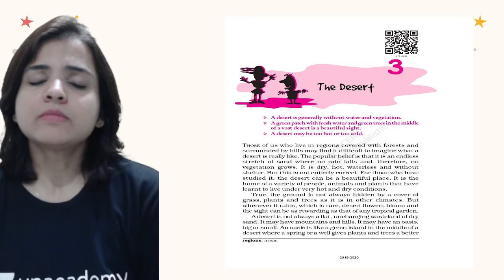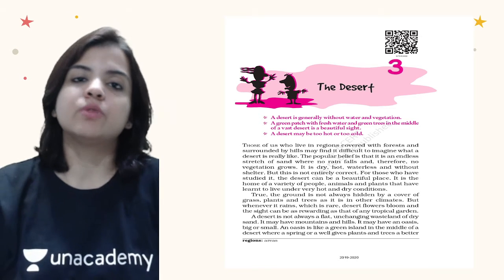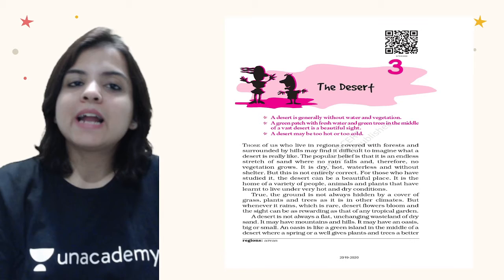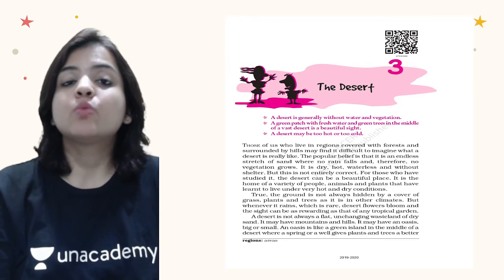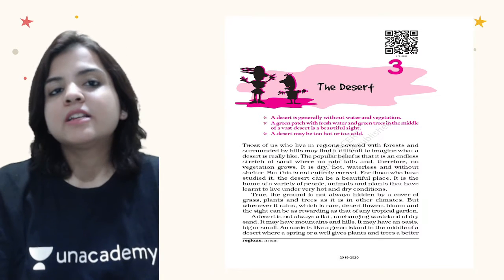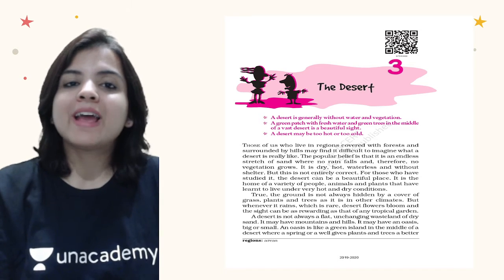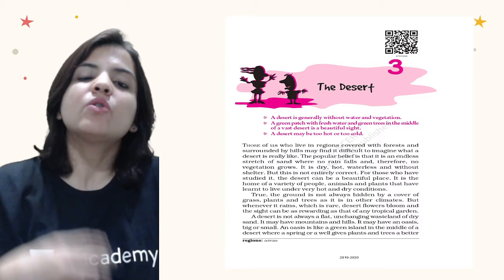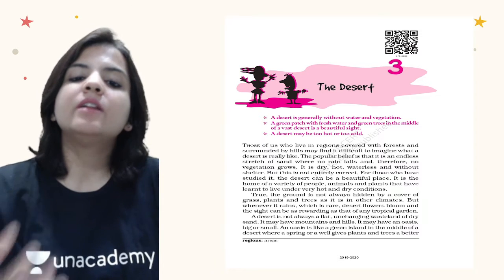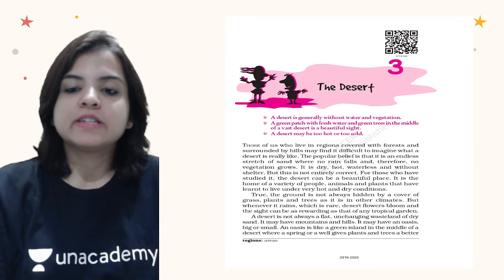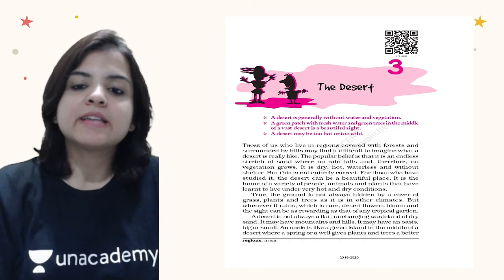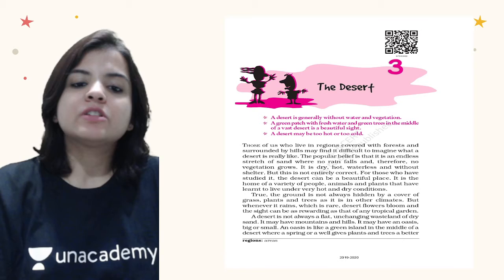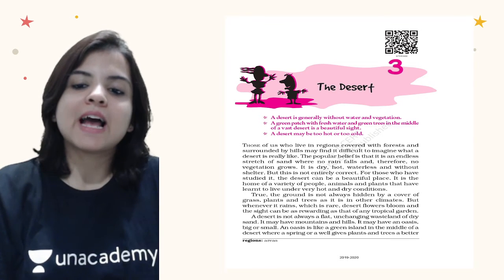In the first paragraph there are two kinds of thoughts shown. The common mindset is that nothing grows in a desert — it's very dry. But specialists say that deserts, like any other land formation, have their own kind of vegetation and people who have adapted to live there. True, the ground is not always hidden by grass, plants and trees, but whenever it rains — which is rare — desert flowers bloom and the sight can be as rewarding as any tropical garden.